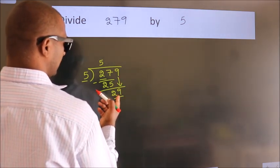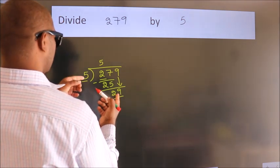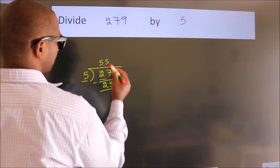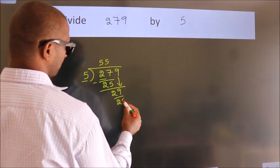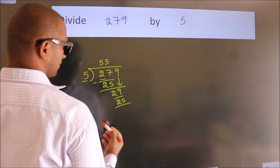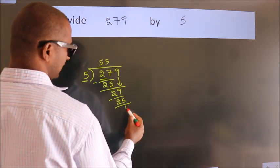A number close to 29 in the 5 table is 5 times 5, which is 25. Now we subtract. We get 4.